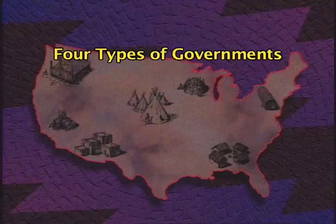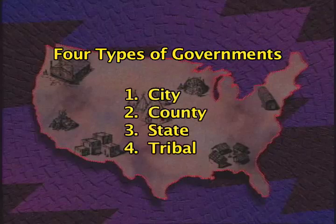As a matter of fact, tribal governments are one of the four types of federally recognized governments in the United States. These are city governments, county governments, state governments, and tribal governments.